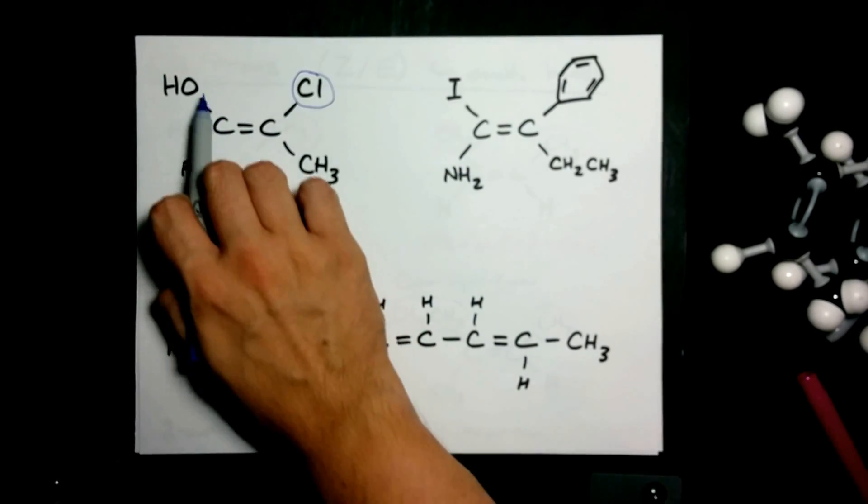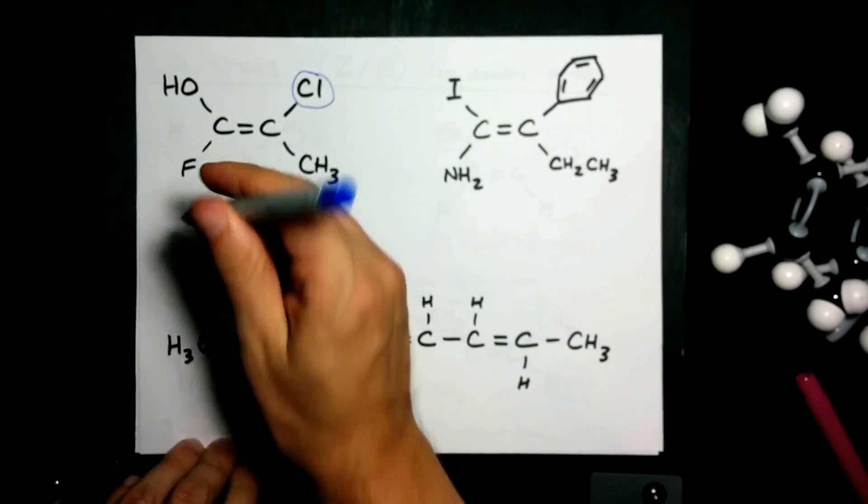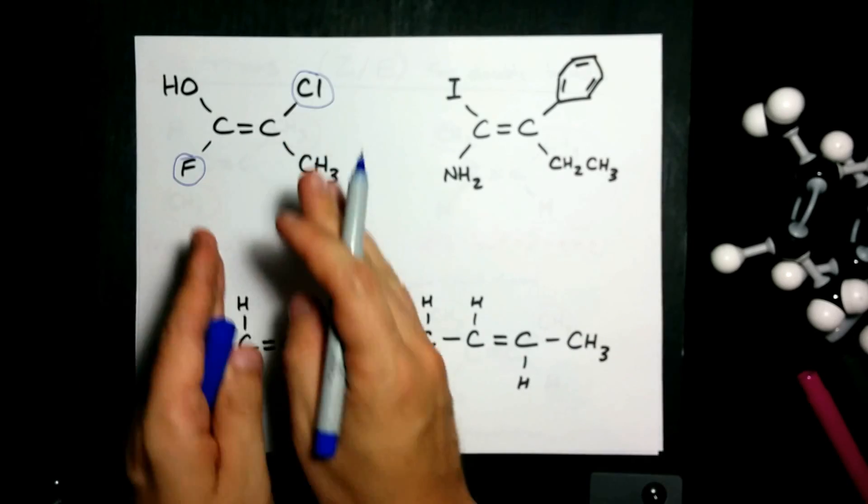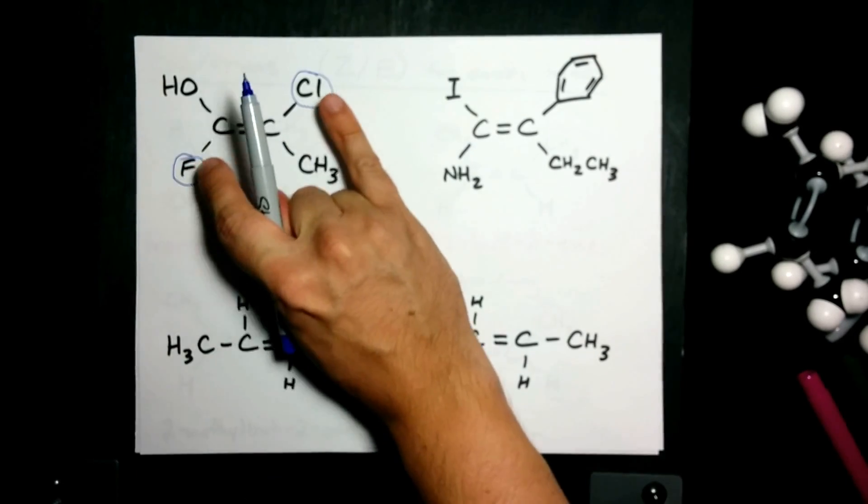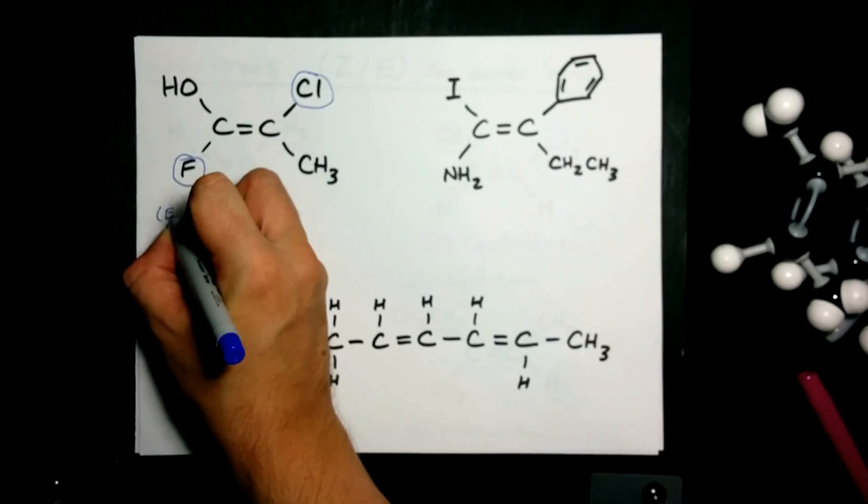This carbon is connected to an oxygen and a fluorine. That's 16 atomic mass units versus fluorine's 19. Again, I would hesitate to call that trans because these two groups aren't even the same thing. I would jump to calling it E.